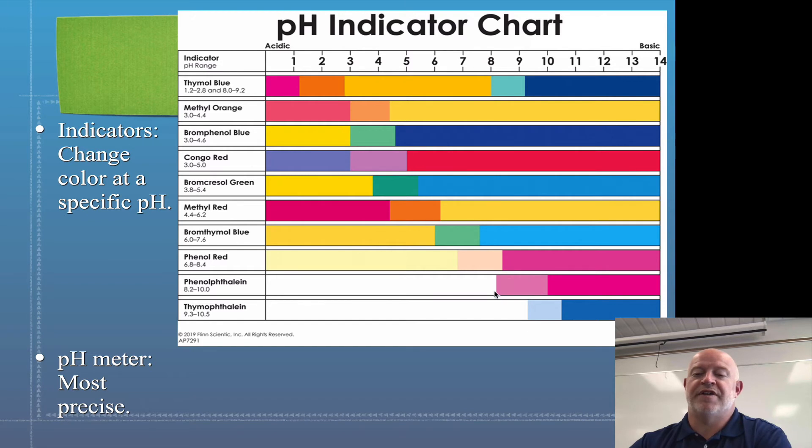So it's a great indicator because of how it goes from clear to pink. Once you get from that kind of faint pink to a really dark pink, you know you've hit that basic range for sure.